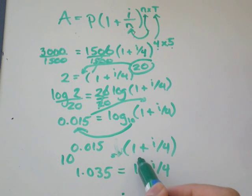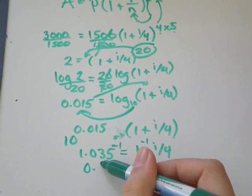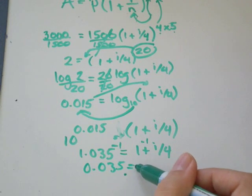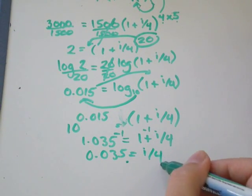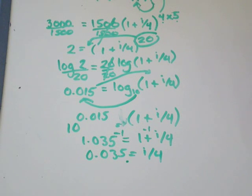To get rid of this 1, I'll just subtract 1 from both sides. 1.035 minus 1 would be 0.035 equals, I'll just be left with i over 4 on this side.